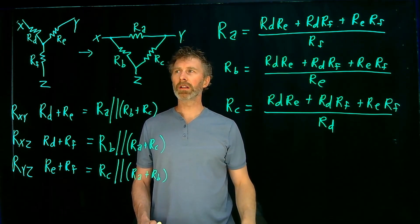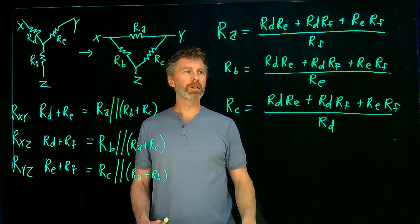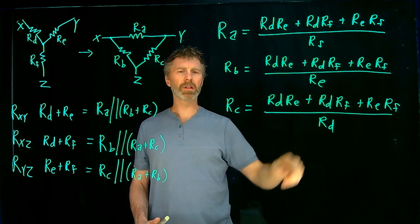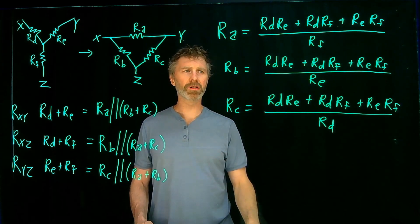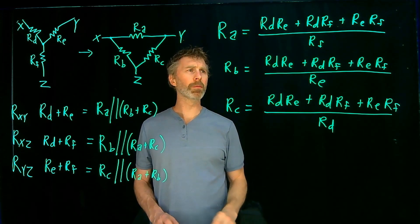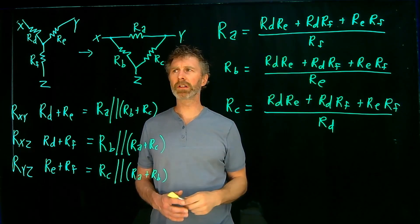Now you may need to know off top of your head, these expressions. And to help you remember them, you can note that the numerators are all the same for all, for RA, RB and RC. It's the denominator that's different. And the way that you can remember which denominator to use or which, which of RE, RF and RD to use.